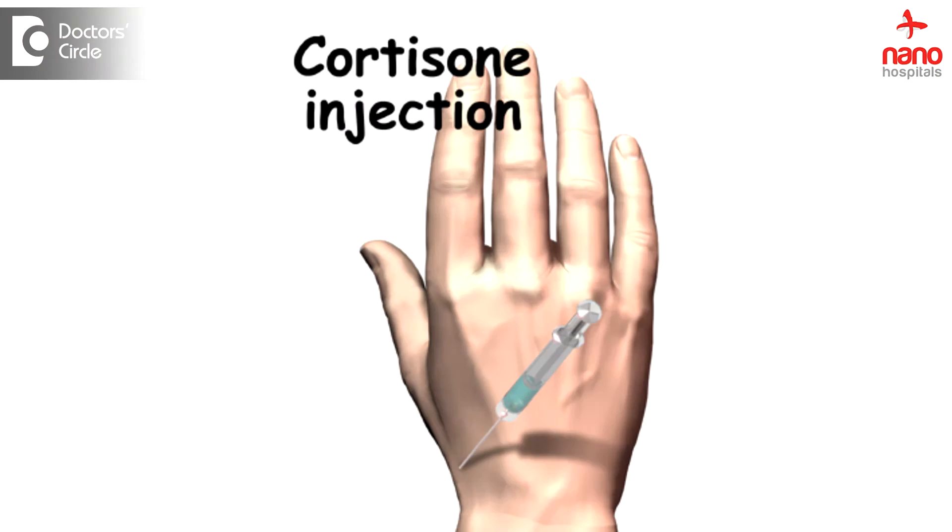Other methods would be injecting a steroid or a hyalase injection into the ganglion. The other, simplest surgical method would be an excision of the cyst. But then all these are directed towards the symptom — it is only directed towards the cyst. What might be the underlying problem has to be tackled to prevent recurrences.